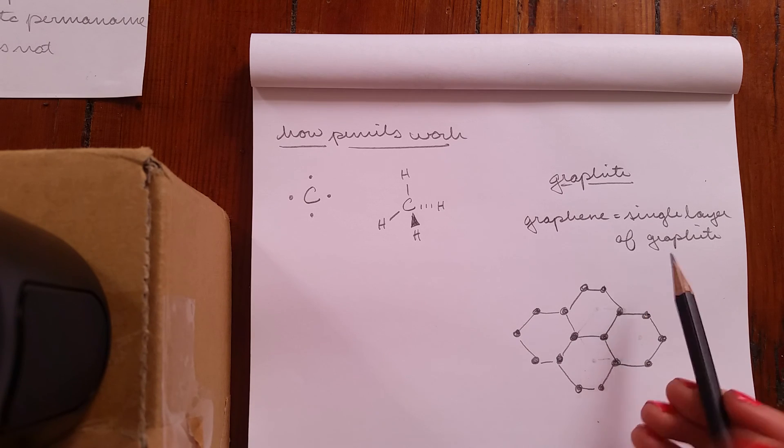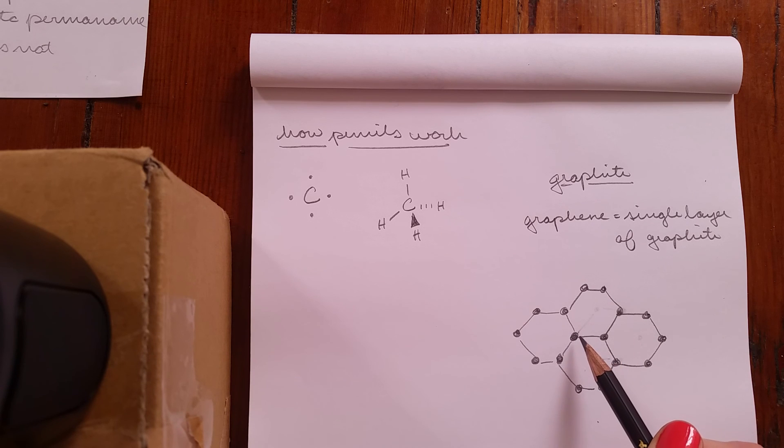Basically, what happens is when you have graphene, you have this flat honeycomb structure of carbon atoms bonded to other carbon atoms. That's great. When you start stacking those, then you get graphite.